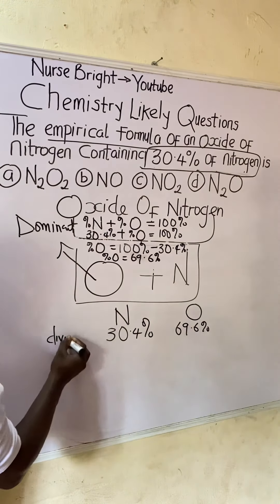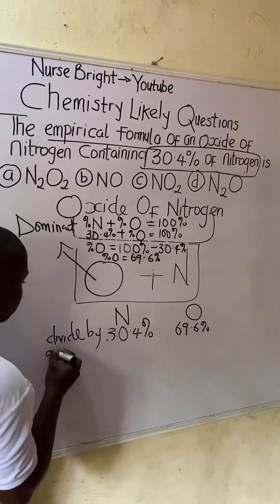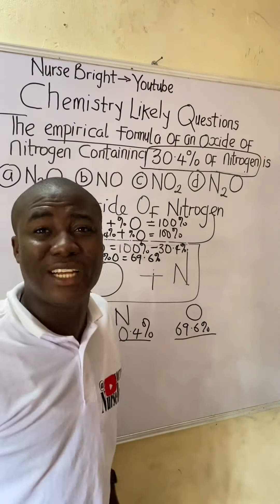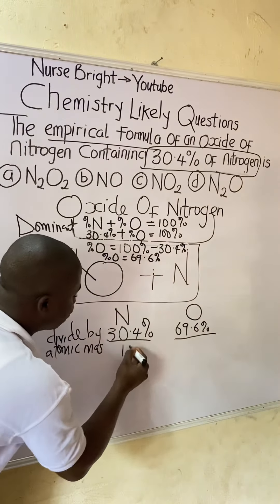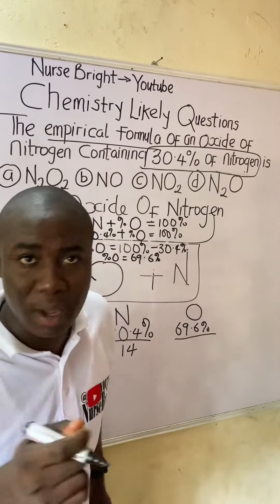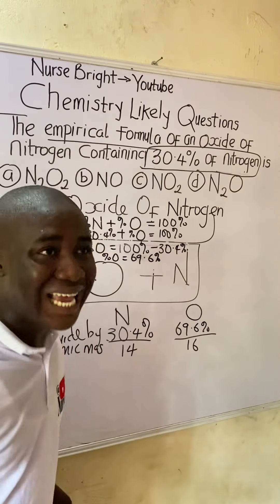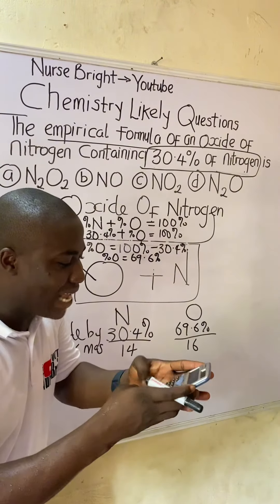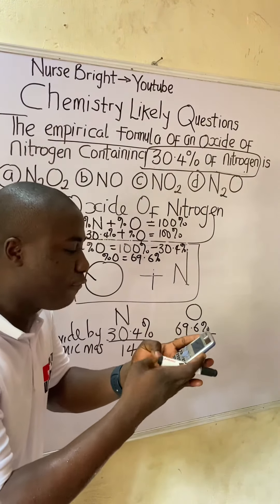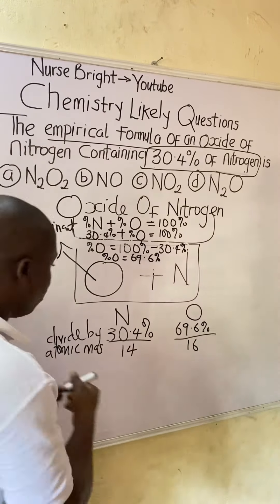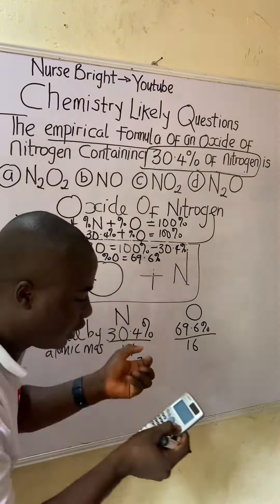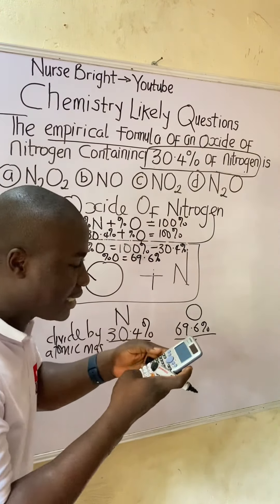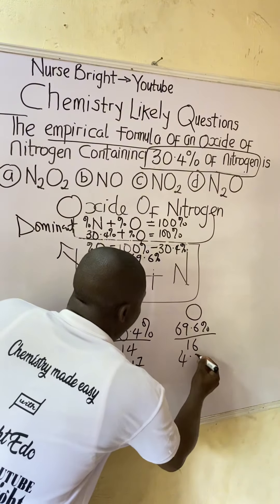Ask yourself: what are the atomic masses of these elements? The atomic mass of nitrogen is 14, and the atomic mass of oxygen is 16. Now divide: 30.4 divided by 14 equals 2.17, and 69.6 divided by 16 equals 4.35.